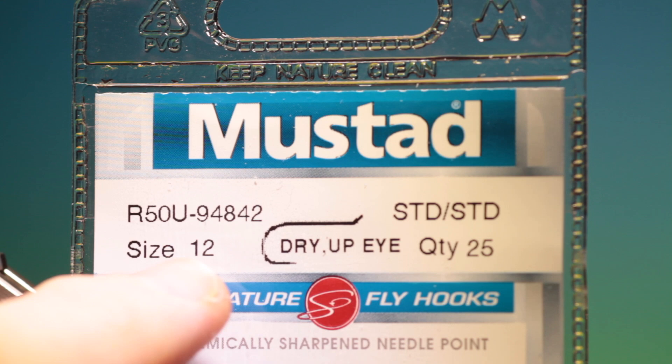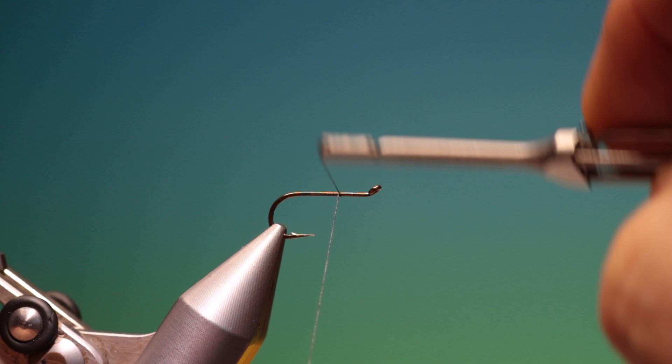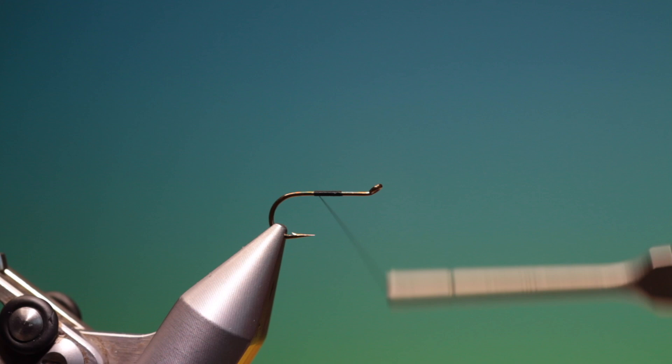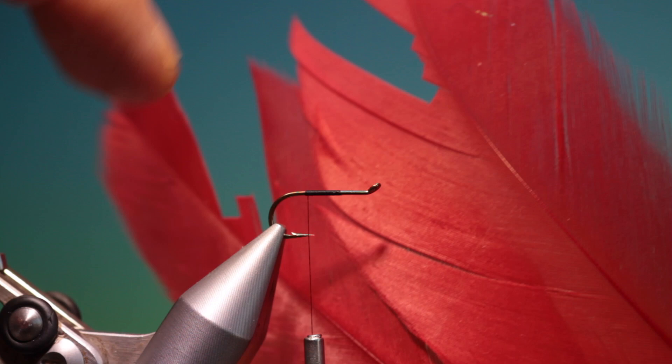Okay, we'll start with the Mustard R50U. This is an up-eyed size 12 dry fly hook. I've got Sheer 14-0 black, so we'll just attach this and go a little ways back, remove that, and then I want to go just a little past the hook point.